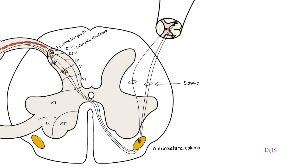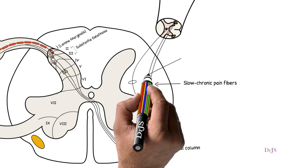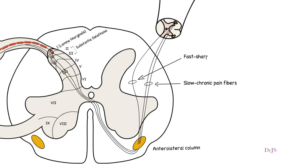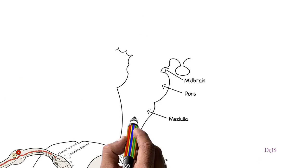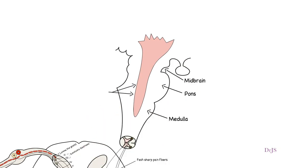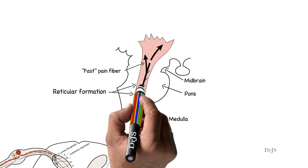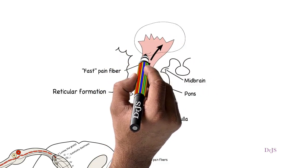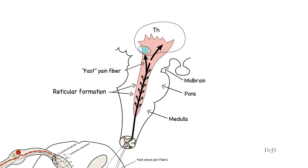The slow and fast fibers enter into the brainstem via the anterolateral pathway. A few fibers of the neospinothalamic tract terminate in the reticular area of the brainstem, but most pass all the way to the thalamus without interruption, terminating in the ventrobasal complex and posterior nuclear group of the thalamus.